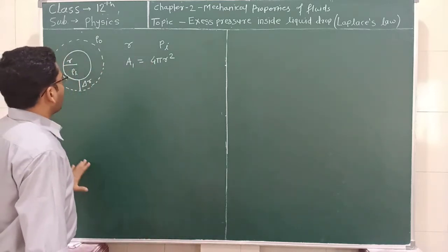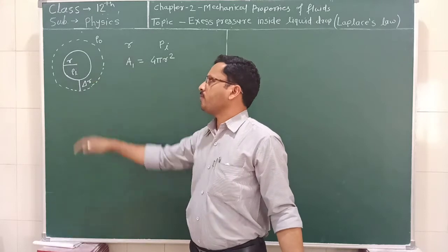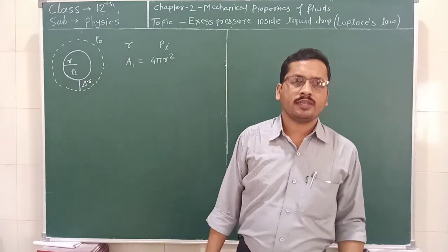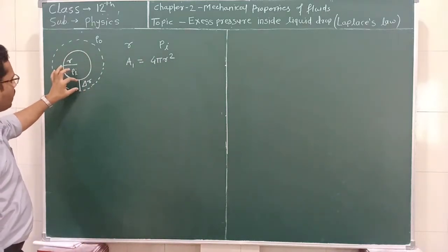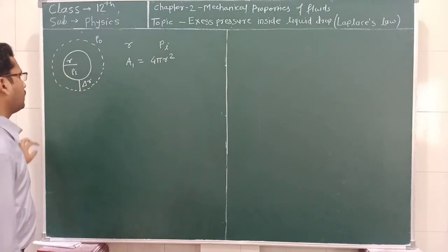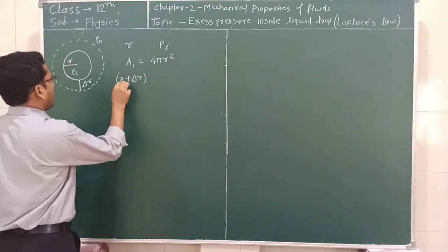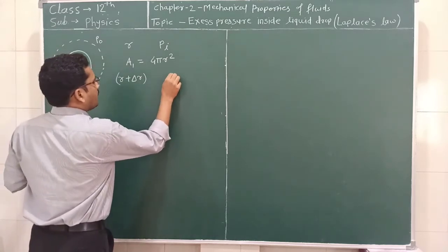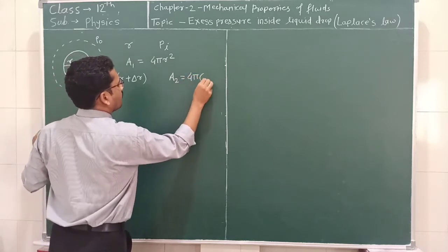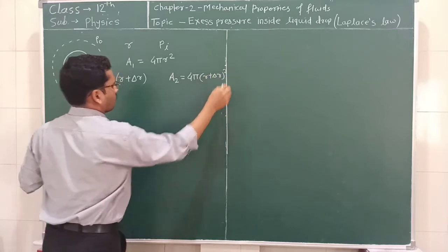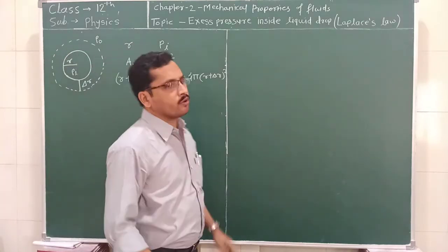Now, if we apply some pressure to this liquid drop, the volume of the liquid drop increases. Consider that the surface of the liquid drop increases by radius delta R. In this case, the total radius of the sphere is equal to R plus delta R, and the surface area A2 is equal to 4π(R + δR)². So, we are going to derive a relation for the excess pressure.